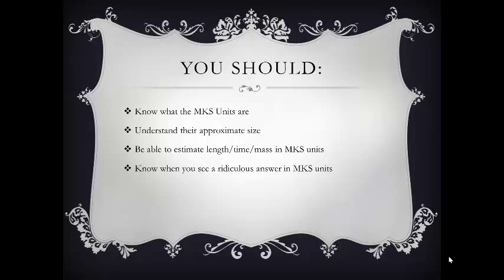Understanding MKS units well also means you can recognize when you get a ridiculous answer on a problem. One of the frustrating things is when students give me an answer that is obviously wrong, and they don't realize it. This is a really good way of checking your work. If you get something like the mass of a rabbit being 2,000 kilograms, hopefully you'll understand that's not correct. I'll also try to assign questions that have real, sensible answers, so we'll meet each other in the middle.